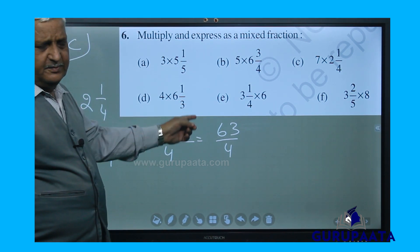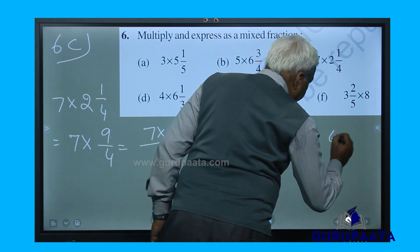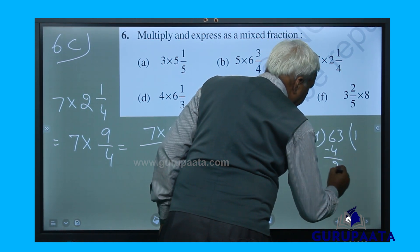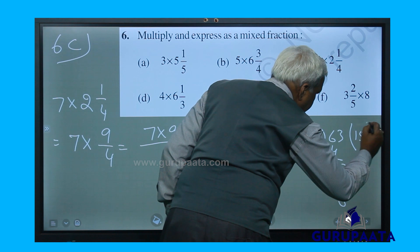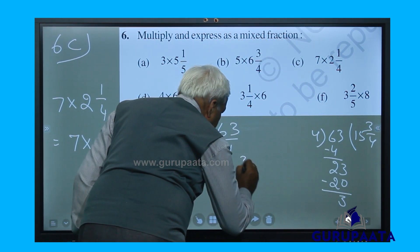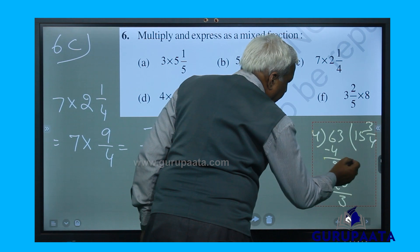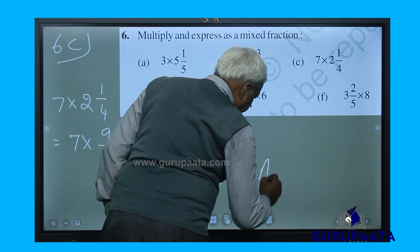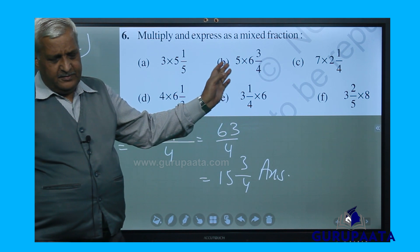63 by 4 is to be converted to a mixed number. Dividing 63 by 4: 4 ones are 4, remainder 3. Our answer is 15 and 3 by 4. I am removing this portion of the writing to avoid confusion. Our answer is 15 and 3 by 4. We have completed 6c.